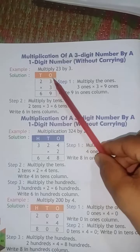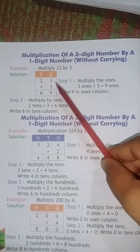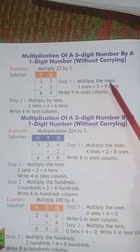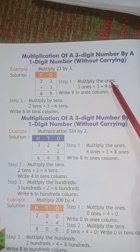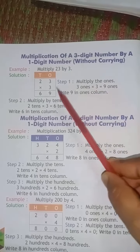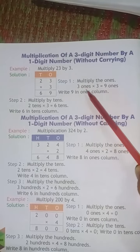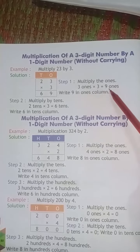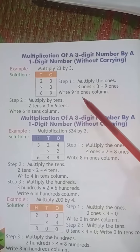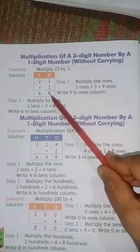Tens and ones. 23 into 3. Step 1: Multiply the ones. We have to multiply the ones first. 3 ones into 3 is equal to how much? 9 ones. Write 9 in the ones column. So here we have to write 9.